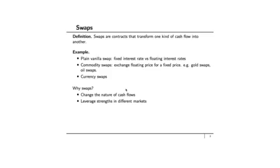So why do companies or entities construct swaps? They do so because you want to change the nature of cash flows — for example, fixed interest rate versus floating interest rate. Another possibility is to construct swaps to leverage strengths in different markets.